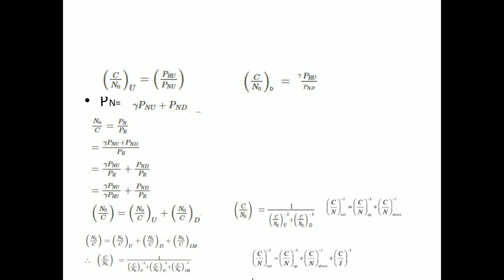The second term is PND by PRU. PND is the noise of the downlink divided by the power received at the downlink — that is gamma times PRU — which is nothing but N/C of the downlink. This expression is also written as: C/N₀ total inverse equals C/N₀ uplink inverse plus C/N₀ downlink inverse, or equivalently, C/N total inverse equals C/N uplink inverse plus C/N downlink inverse.